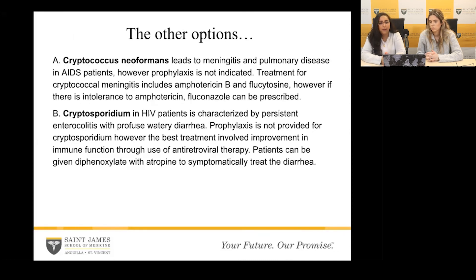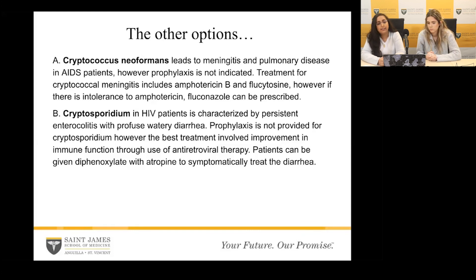Regarding the other answer options: Cryptococcus neoformans leads to meningitis and pulmonary disease in AIDS patients, but there is no prophylaxis for it. If meningitis does occur, it is treated with amphotericin B and flucytosine; if there is intolerance to amphotericin B, fluconazole can be used instead. Cryptosporidium in HIV patients is characterized by persistent enterocolitis with profuse watery diarrhea. Prophylaxis is not provided for cryptosporidium; the best treatment involves improving immune function through antiretroviral therapy, and patients can be given diphenoxylate with atropine to symptomatically treat the diarrhea.